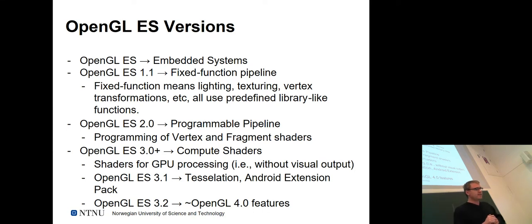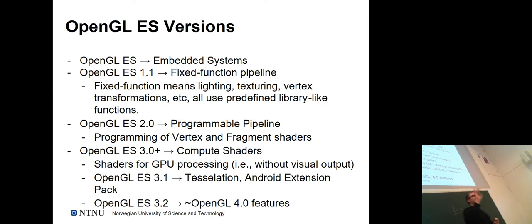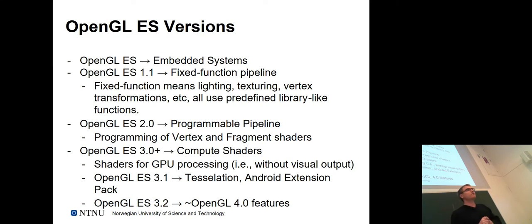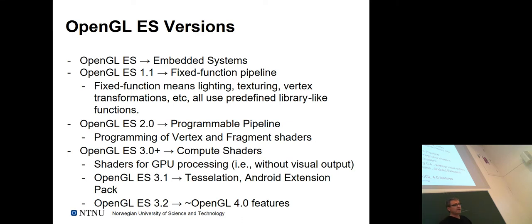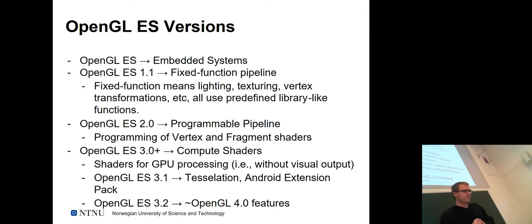OpenGL ES 3 also includes tessellation — that automatic subdivision of surfaces. With OpenGL ES 3.2, it's roughly equivalent to OpenGL 4 for the full desktop version. Looking at Android support: OpenGL ES 1.1 was supported in Android 1.6; OpenGL ES 2 in Android 2; OpenGL ES 3 is available since Android 4.3. Android 7 requires full support including OpenGL ES 3.2 and Vulkan 1.2.